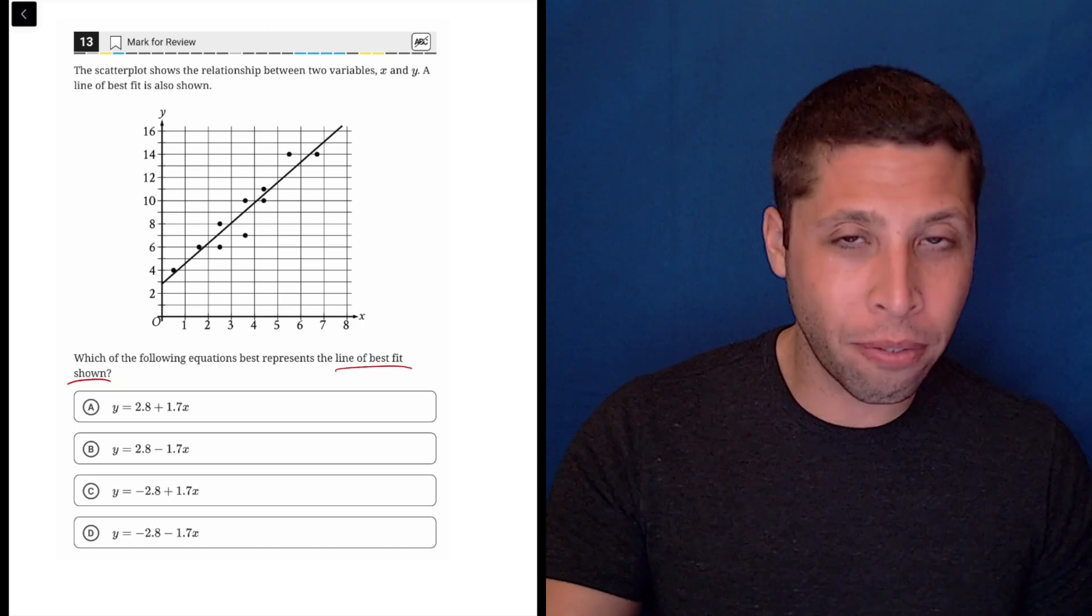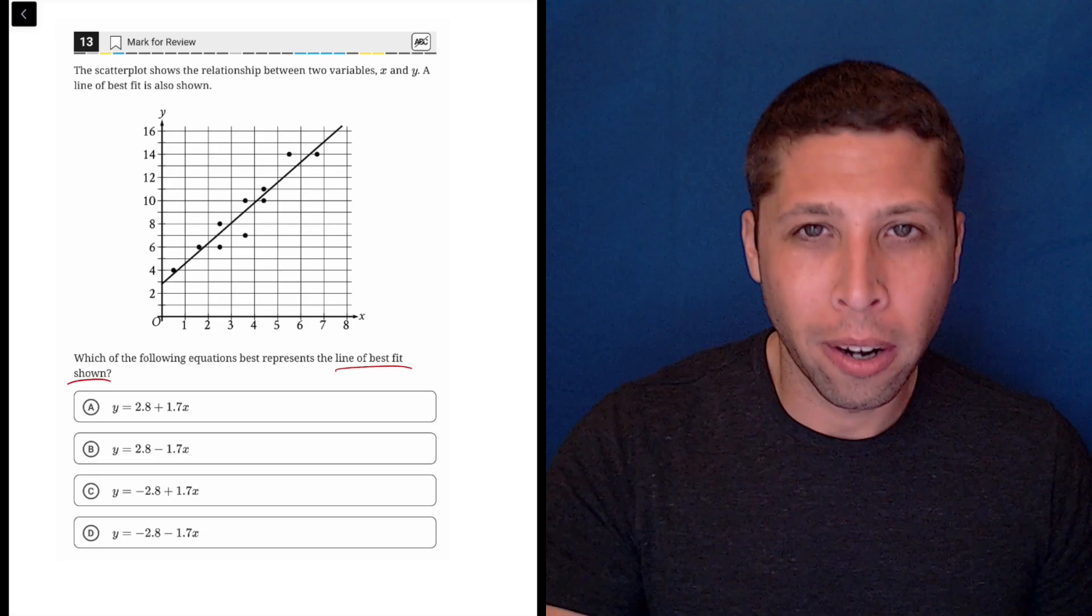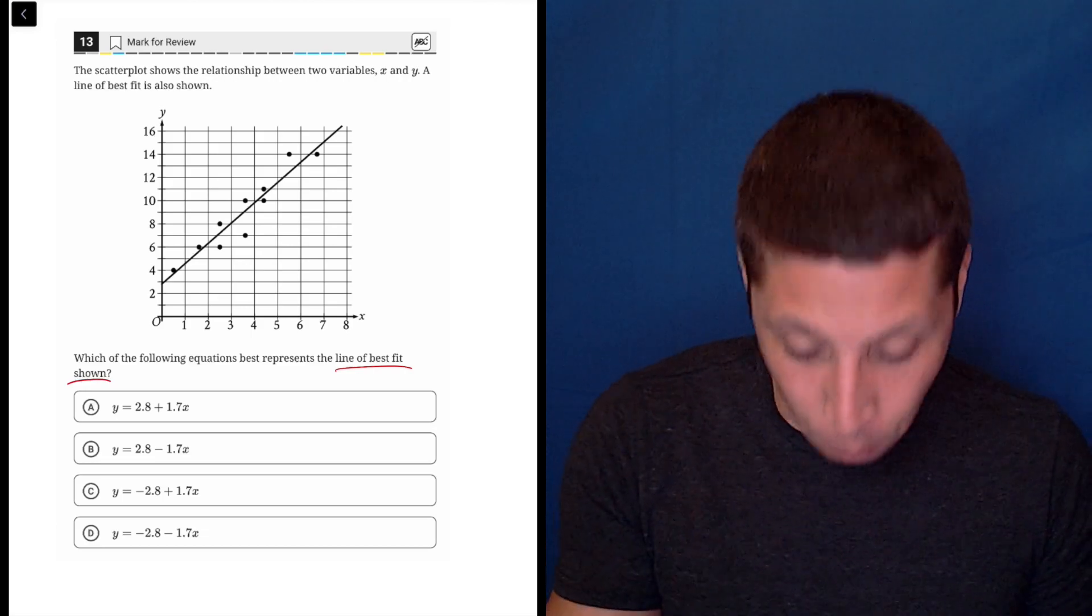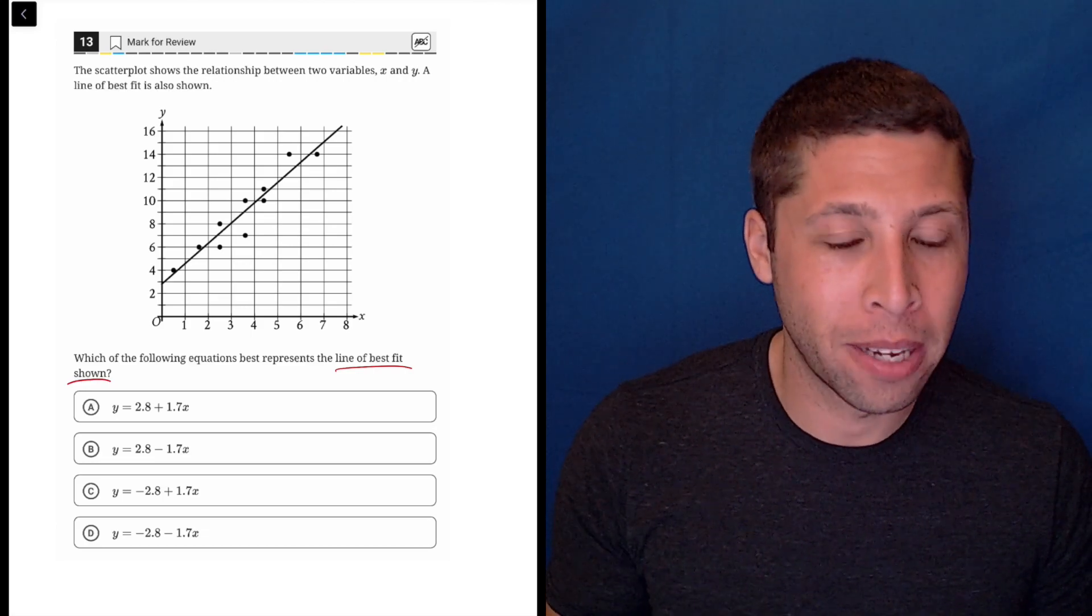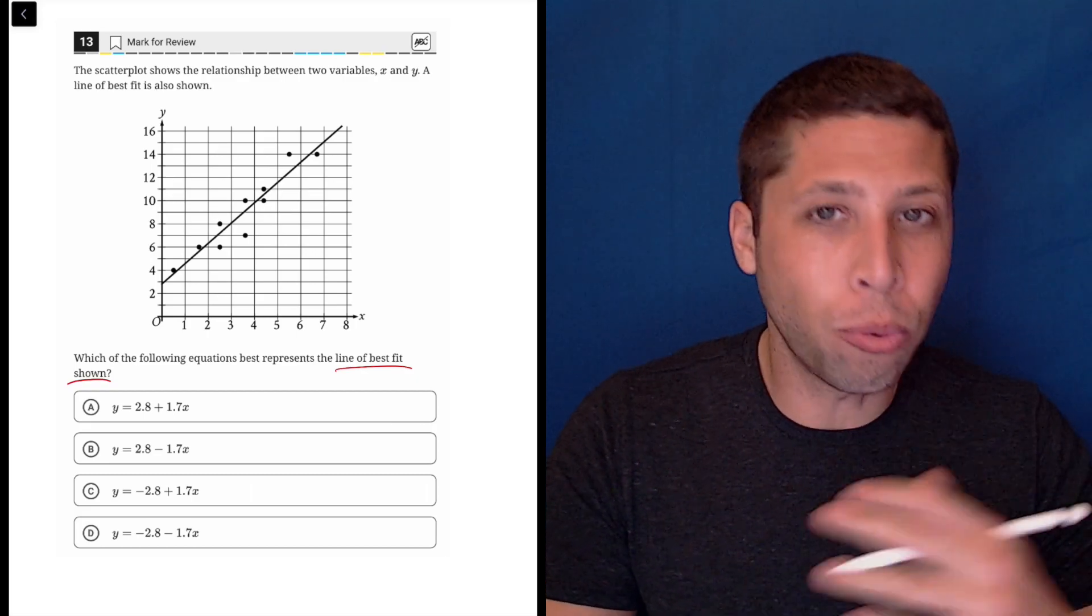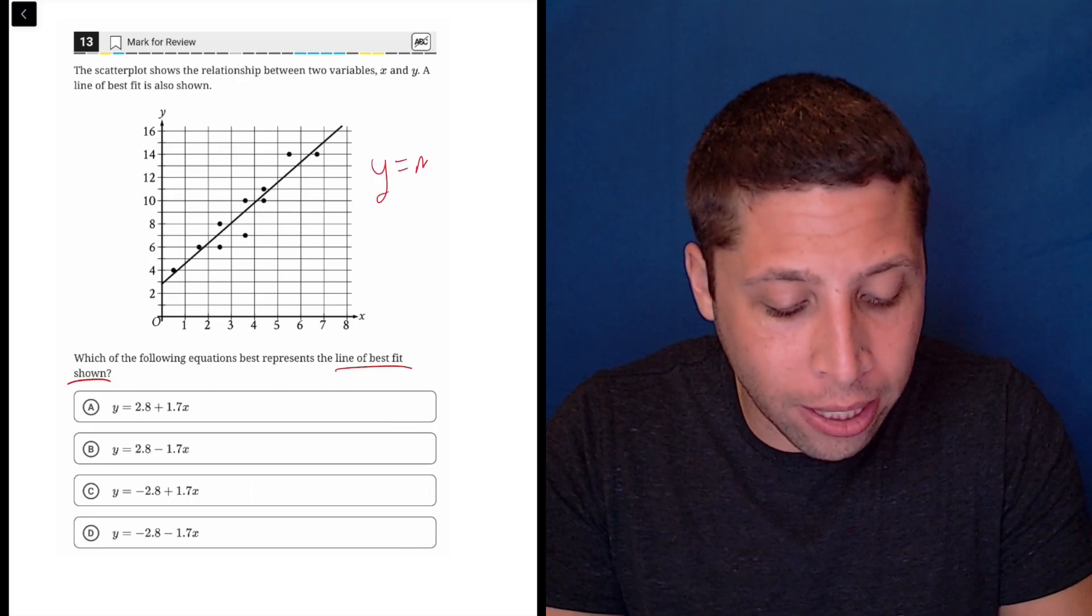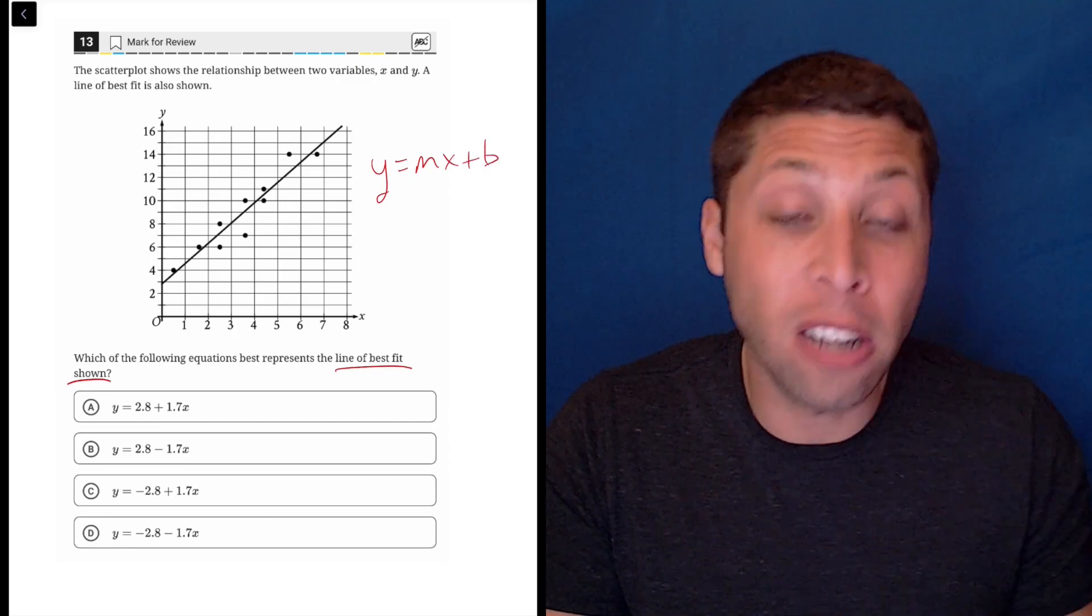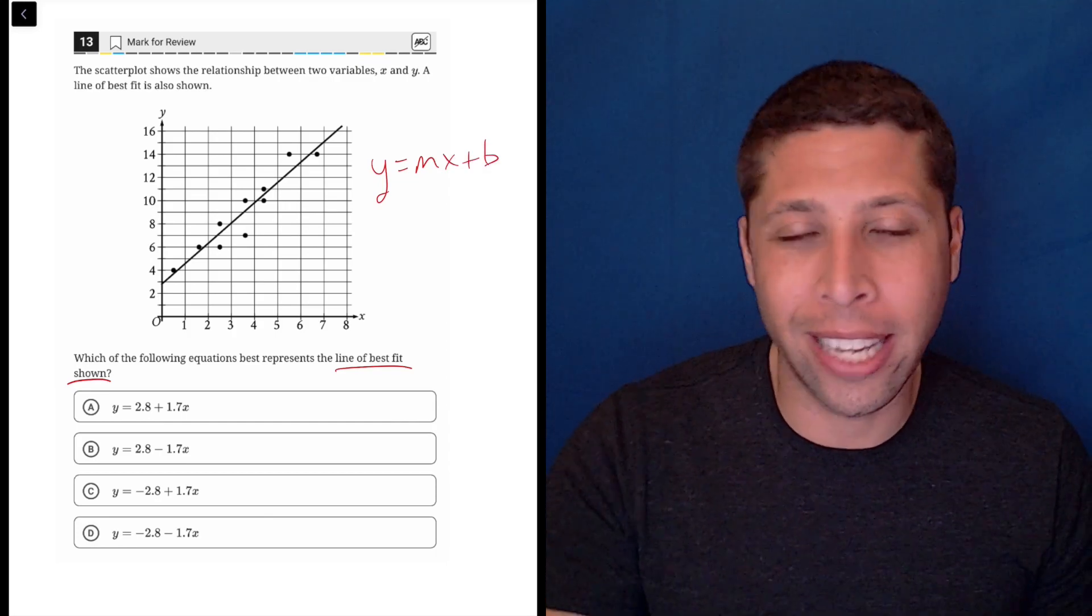But notice that the choices are not varying the numbers, so we don't have to calculate the slope. We don't need to calculate the y-intercept. There's only basically two options for each, and so this is really just about how y equals mx plus b functions, not about doing any calculations.